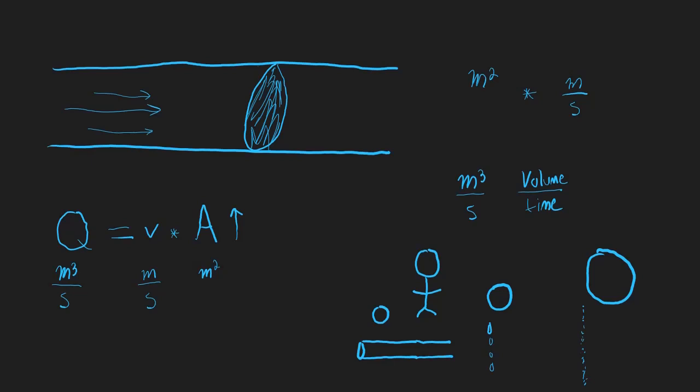So based on that, where is the velocity going to be highest? Is the velocity going to be highest when the total cross-sectional area is small or big? Based on this equation, we know that the velocity is going to be highest here, very high here. And the velocity is going to be much lower here.